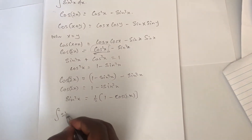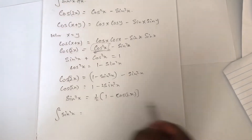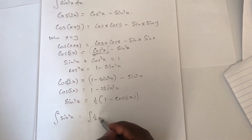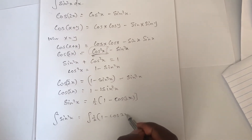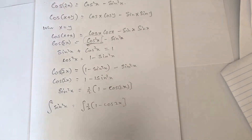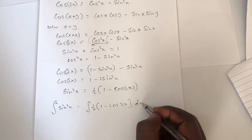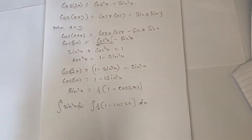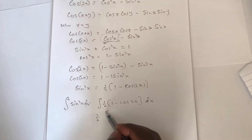So to find the integral of sine squared x, we substitute using this result. The integral of sine squared x is the same as the integral of one half times (1 minus cos 2x) dx. This is the expression we are going to integrate.